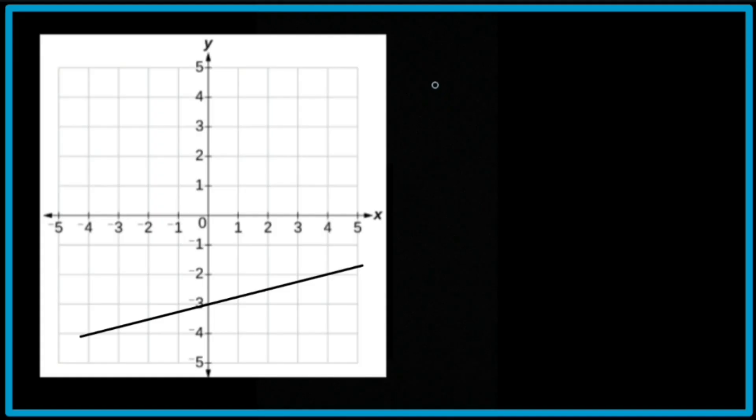So moving on to this example, it's going to be y equals mx. Well, I can see that the line cuts through the y-axis at negative 3. So it's going to be negative 3 there.